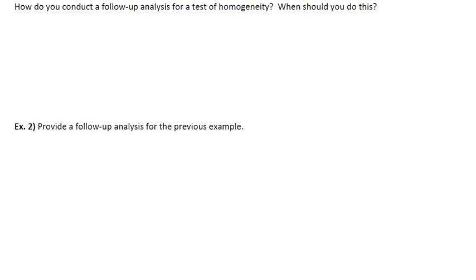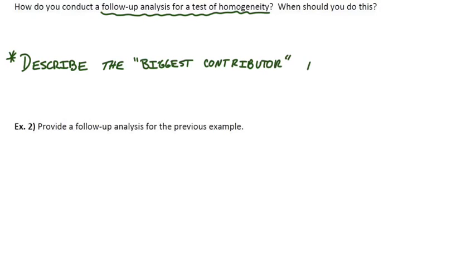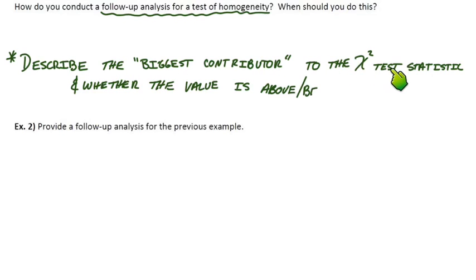Okay, so we're done with that part of the notes. The next part here says, how do you conduct a follow-up analysis for a test of homogeneity? Well, the idea is actually the same as the follow-up analysis for a goodness-of-fit test. You just want to describe what category or what cell ended up being the biggest contributor to that chi-square test statistic. And also, like how did it contribute? Was the value above or below the expected count?